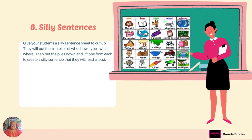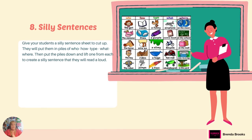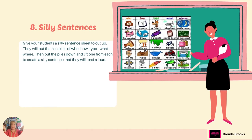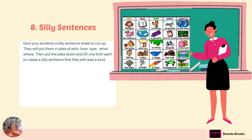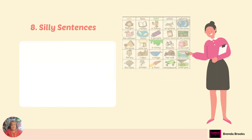Number eight: silly sentences. Take strips of paper and write partial sentences, using picture cues organized by the categories who, how, type, what, and where. Have the students cut these up and put them into piles according to those categories. Then have them flip the cards over and read the silly sentences that they've created.